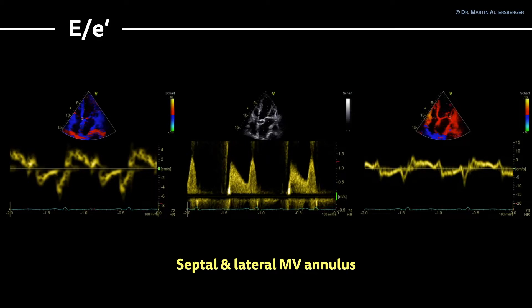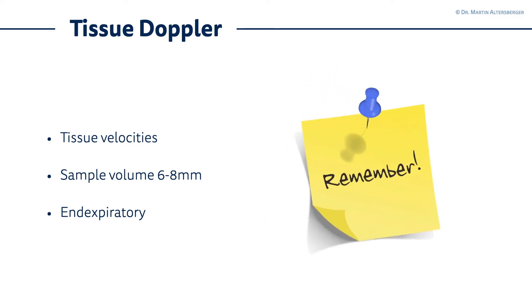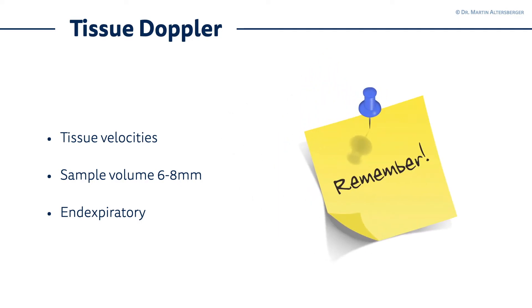To put this into a measurement for sick left ventricles, we calculate the E-to-E-prime ratio using the E wave and the E prime of both the septal and lateral mitral valve annulus. Some important tips for tissue Doppler: it measures tissue velocities, which are lower than blood flow velocities, so use the specific TDI preset. Set the sample volume to approximately 6 to 8 millimeters. Also, ask the patient to exhale — placing the sample volume in expiration can improve image quality.